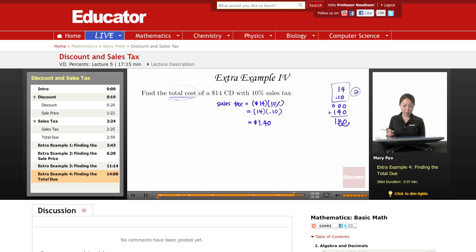So $1.40 is how much I have to pay in addition to my $14 I have to pay for the CD. So total due, total is going to be the $14 plus the $1.40.